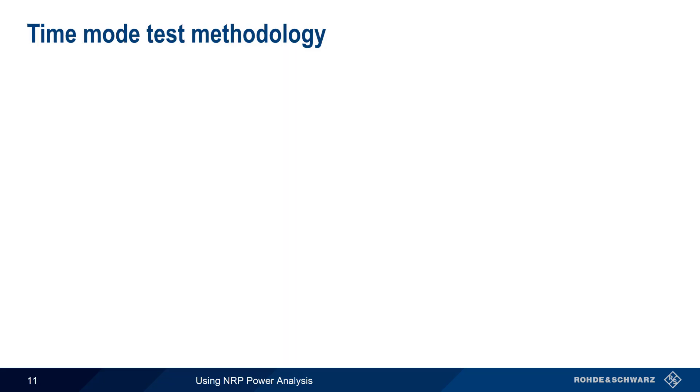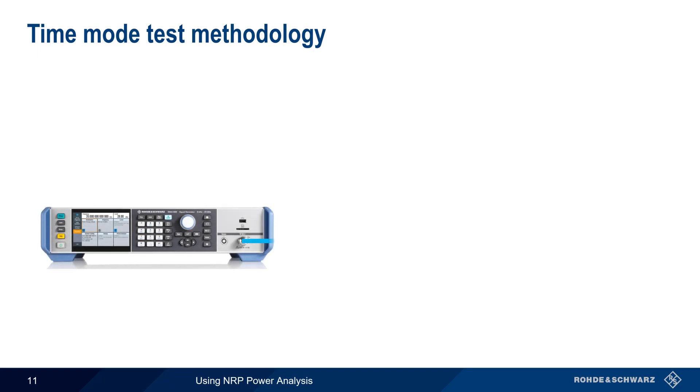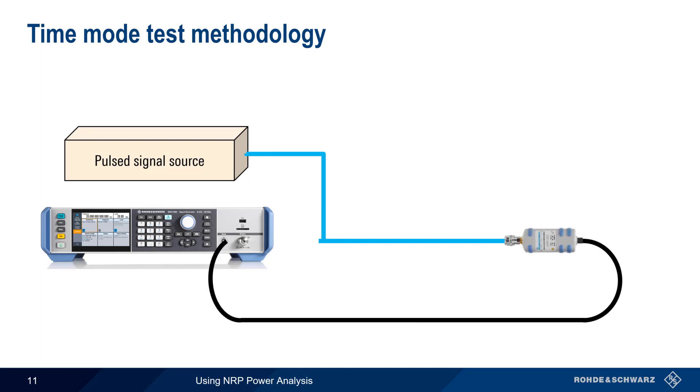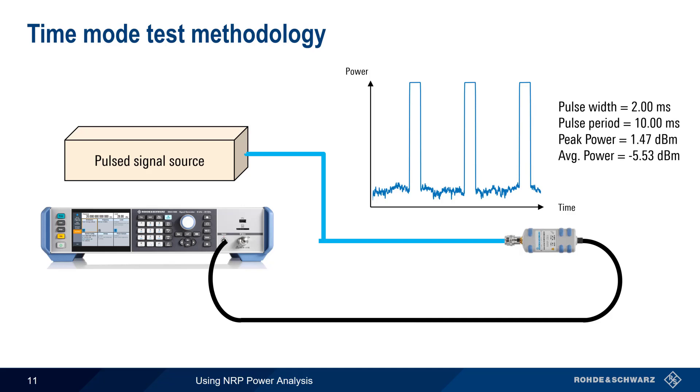Unlike frequency and power mode measurements, in time mode we can measure signals from any source. Signals could be generated by the SMA through some device under test, or the signals could be coming from some external source. In either case, the NRP sensor measures the received signal and displays the results in the time domain, that is, as power versus time. In addition, various pulse parameters can also be automatically displayed and calculated.